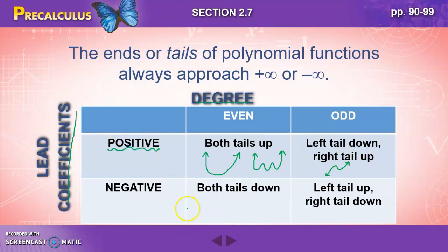If your leading coefficient is negative and the degree is even, so a negative x squared, negative x to the fourth, you're going to have both tails down. Like that. Or again, maybe something like that.